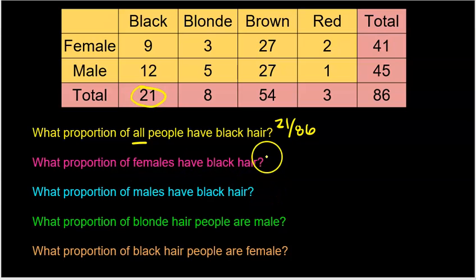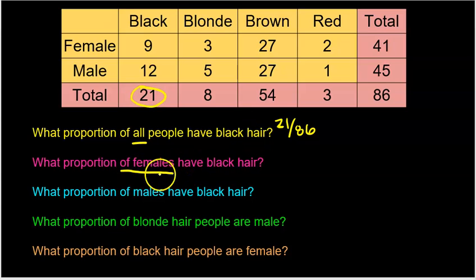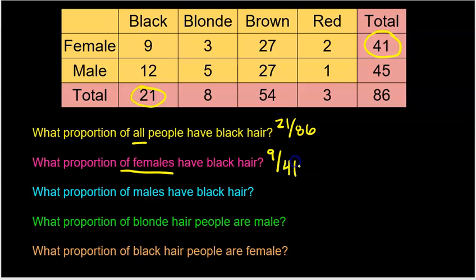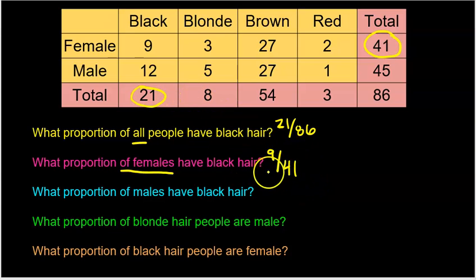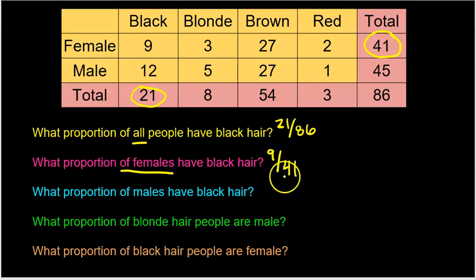What proportion of females have black hair? This is conditional because it says 'of the females' — the condition is you have to be a female. Of the 41 females, 9 have black hair, so that's 9 out of 41. The key is that we're talking 'of the females,' which is why the denominator is now 41.